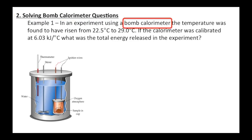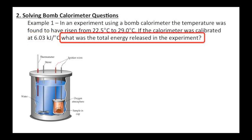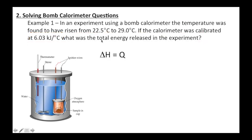In an experiment using a bomb calorimeter, the temperature was found to have risen from 22.5°C to 29°C. If the calorimeter had a heat capacity of 6.03 kJ/°C, what was the total energy released? Okay, we want to find the total energy released, the change in energy. Well that would be Q.